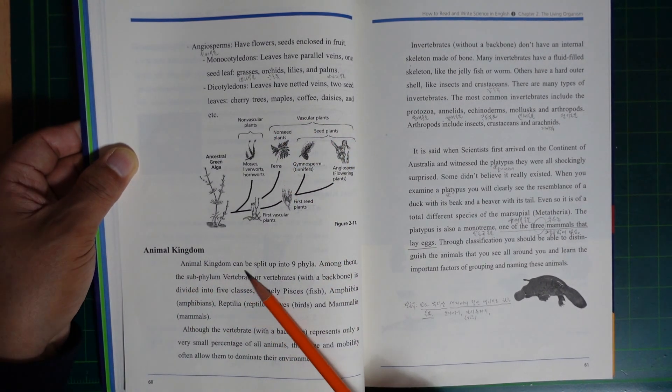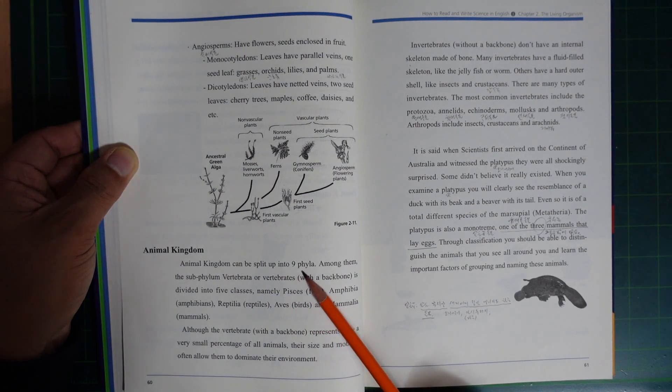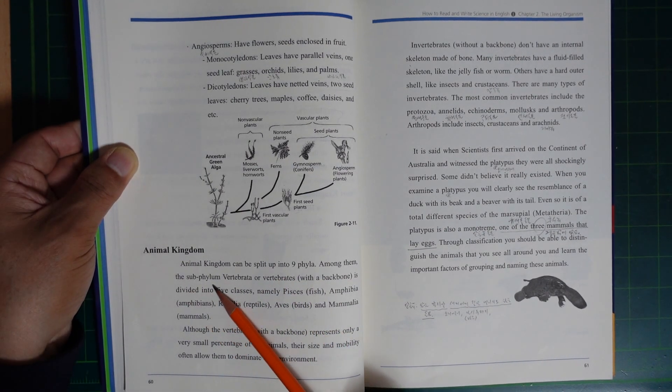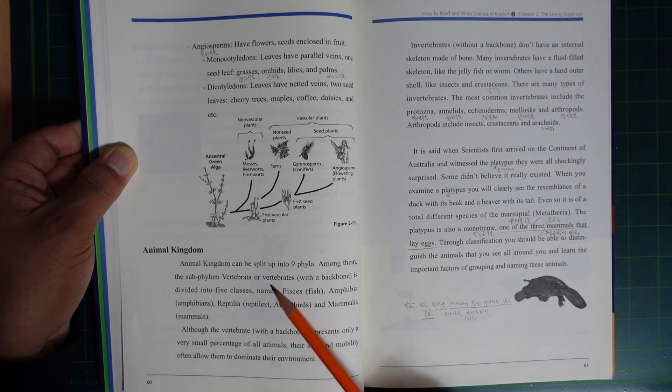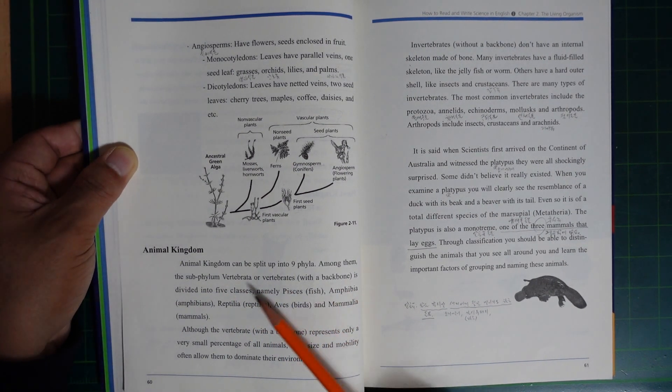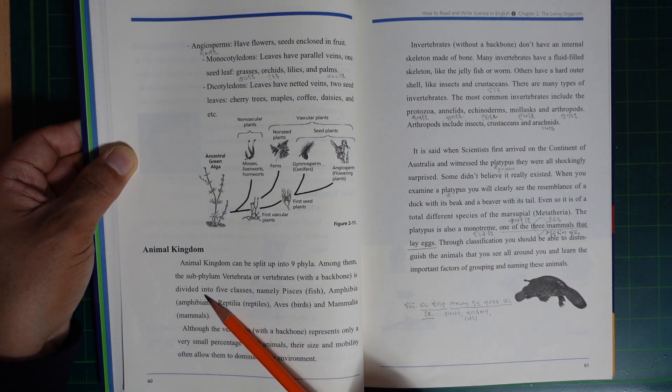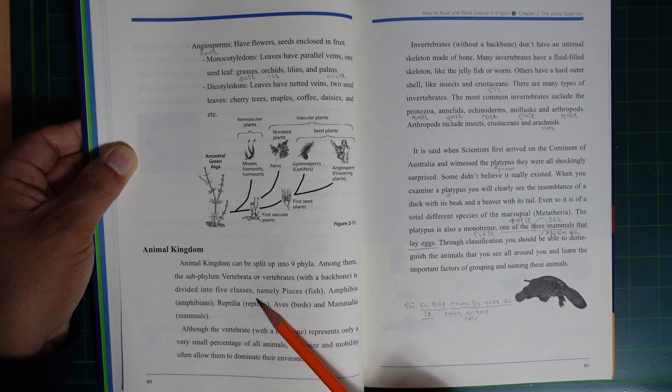Animal Kingdom can be split up into nine phyla. Among them, the subphylum Vertebrata, animals with backbones, is divided into five classes.